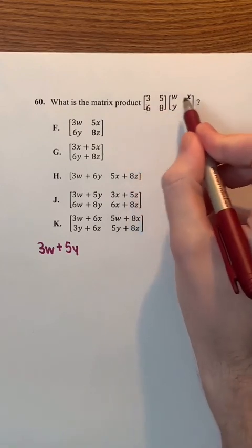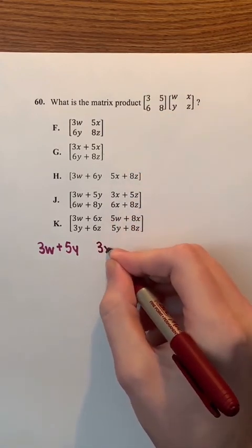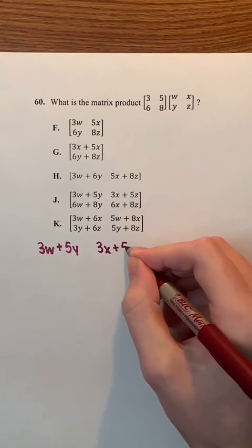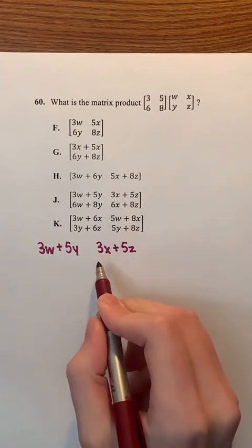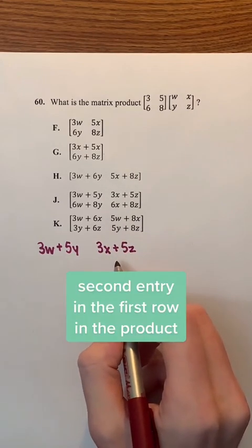Then we're going to have 3 times x, which is 3x. And then, we're going to add 5 times z, which is 5z. Therefore, 3x plus 5z is the second entry in the first row in the product.